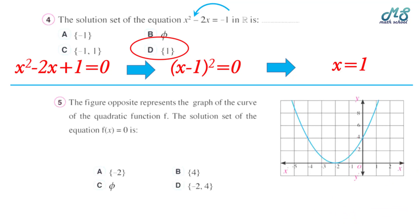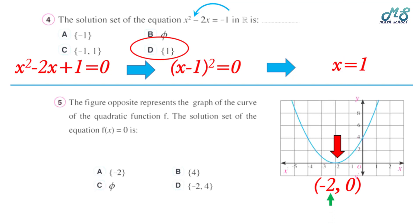Number five: the figure shows the graph of a quadratic equation f. Find the solution set of f of x equals zero. Determine the intersection point with the x-axis — it is at negative 2, so x equals negative 2 and the solution set is {negative 2}. The correct answer is A.